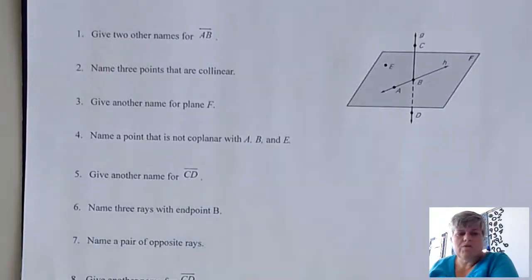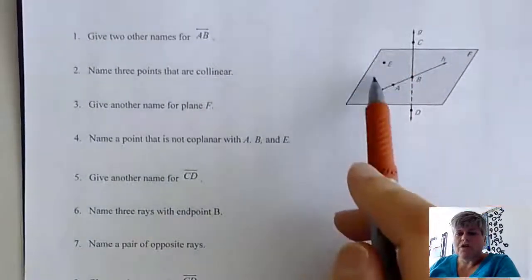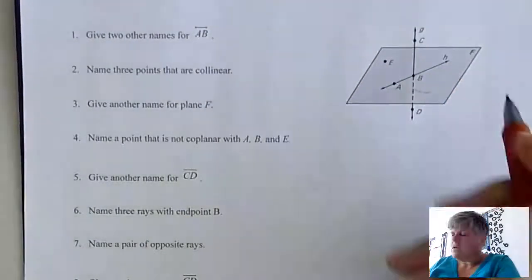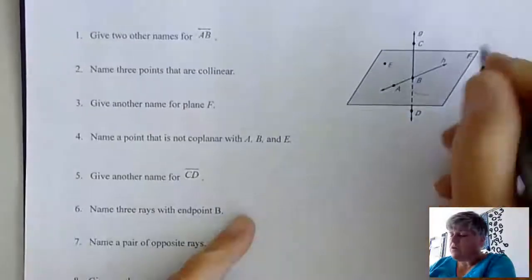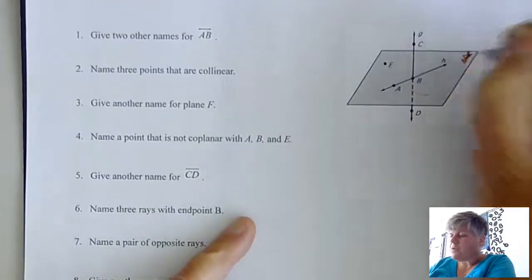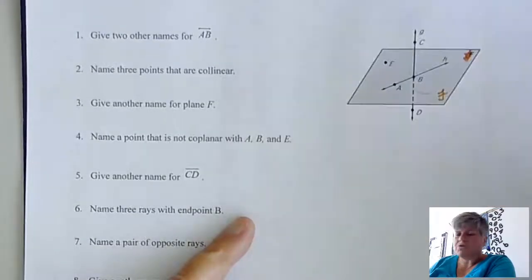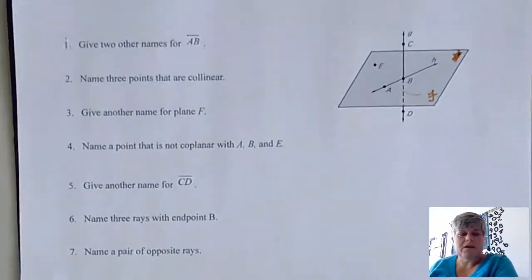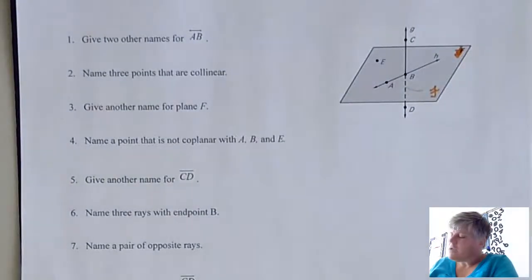Let's do some problems that are related to the vocab that we just did. You can see we've got a shape over here which is a plane. We've got some capital letters, some lowercase letters. We've got a letter right here which is the F, and let's make that more scripted. Because remember, we want a plane to have script letters if we're not going to name it with three non-collinear points.